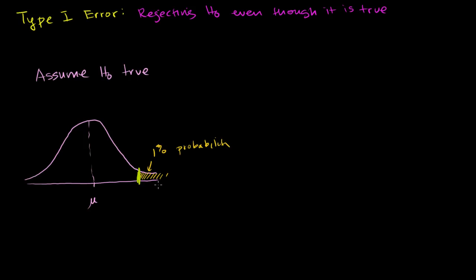So let's say we're looking at sample means, and we get a sample mean that is way out here. We say, well, there's less than a 1% chance of that happening given that the null hypothesis is true. So we are going to reject the null hypothesis.